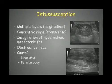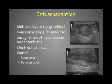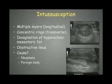There is also an invagination of hyperechoic mesenteric fat together with the intussusception. This hyperechoic fat is visible here. We can see the loop on the outside and the loop on the inside, with the mesenteric fat also situated within that loop.